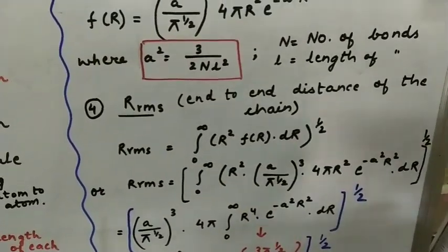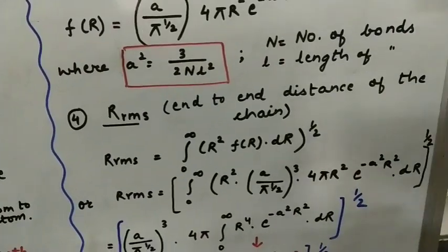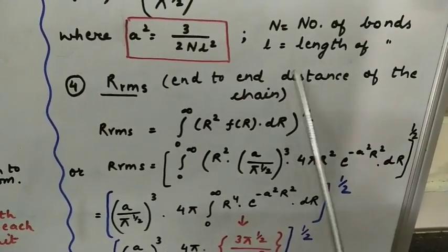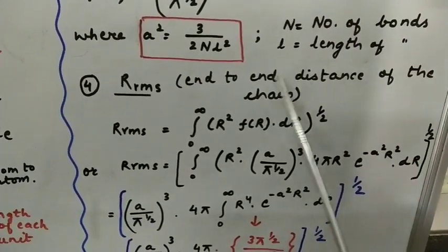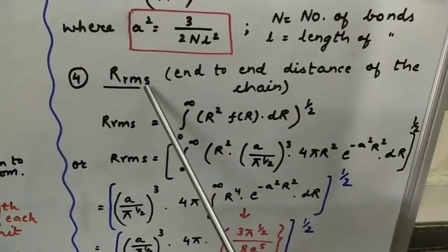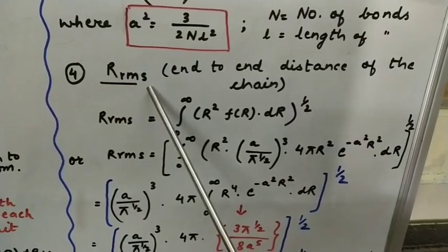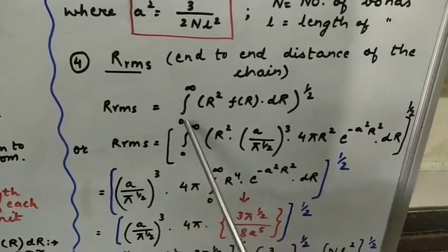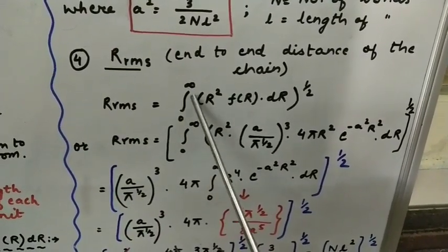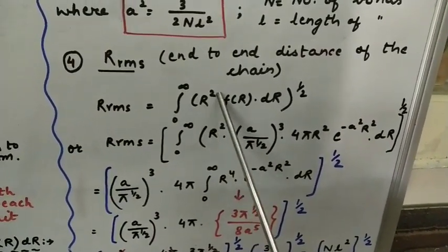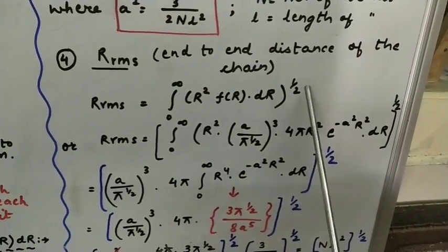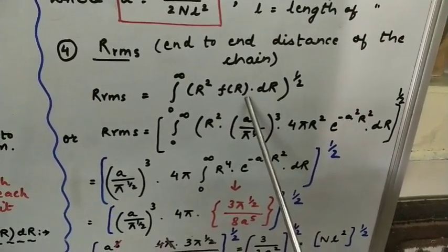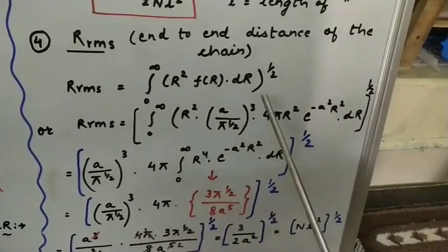So the next thing which we are going to talk about is RRMS that is your end to end distance of the chain. End to end distance of the chain. Root mean square radius or chain length. RRMS is a kind of integration starting from 0 to infinite. Here we have R² F(r)dr to the power half.